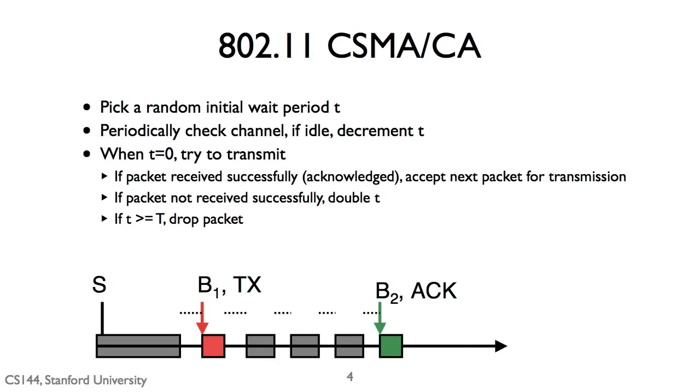If it hears an acknowledgement, then it accepts the next packet for transmission. All's good. If it doesn't hear an acknowledgement, it doubles T. So it'll exponentially back off longer and longer. If T grows to be larger than some large T value, then it just drops the packet. Rather than waiting or blocking on a given packet, it'll just drop that packet and try to go on to the next one.